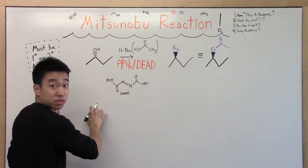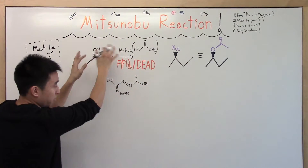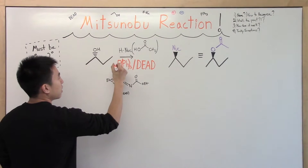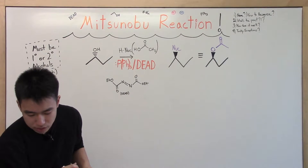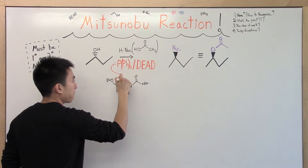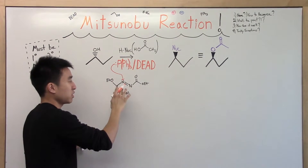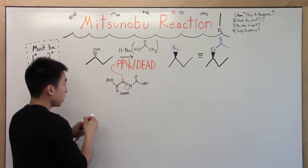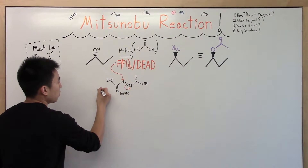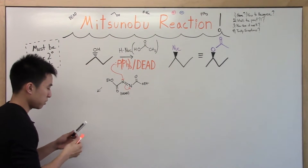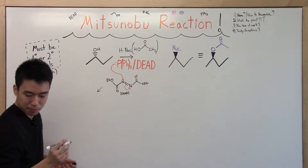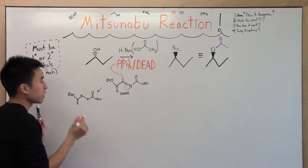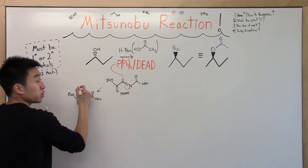All right, so the mechanism. First, you're just going to use PPh3 and DEAD — you're not even going to involve your alcohol until later on. So first, the phosphorus has a lone pair, and that lone pair is going to go ahead and attack one of the nitrogens. When you attack nitrogen, nitrogen gets overwhelmed with too many bonds, so it's going to kick off this bond to the end. When we do this, your phosphorus gets attached, and then you have some charges.